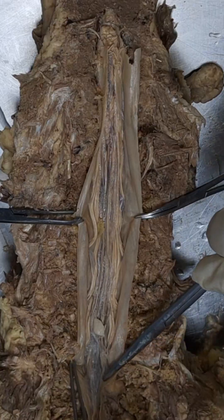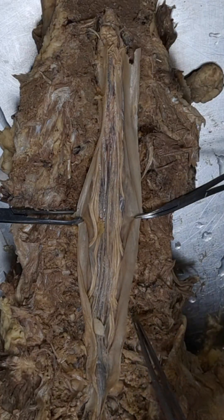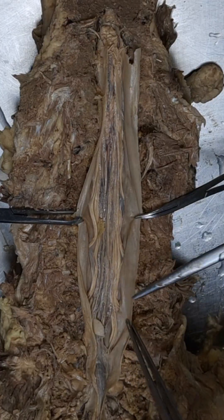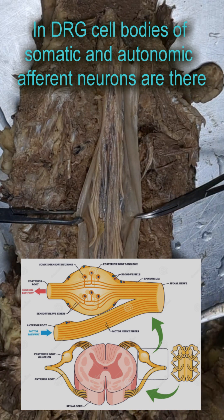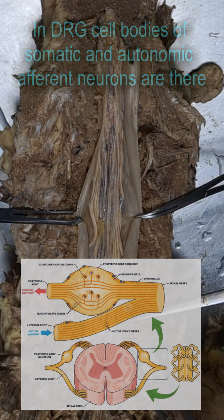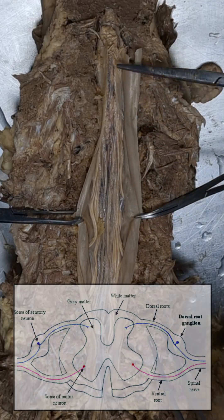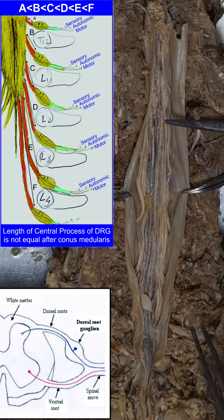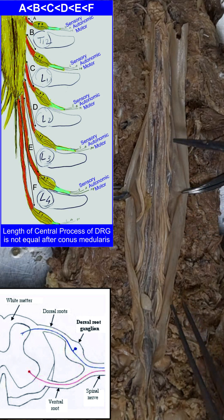Now slowly we will get the concept of the so-called dorsal root ganglion in the foramen. Actually the dorsal ganglion alone is not there in the foramen. Theoretically, the dorsal ganglion is where all somatic and autonomic sensory fiber cell bodies are located. Those neurons are pseudo-unipolar neurons — they have a central process and a peripheral process. The central process is attached at the conus medullaris, so the length of the central process differs at different levels because the dorsal ganglion sits just inside the foramen.